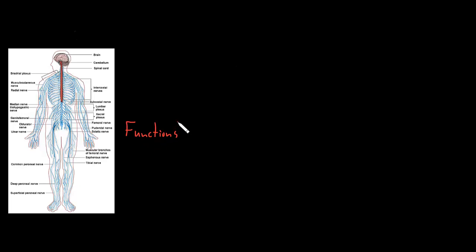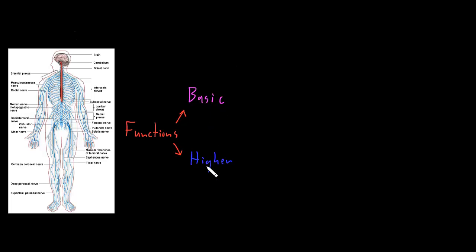The way I like to think about the functions of the nervous system is to first divide them into two big categories: the basic functions of the nervous system and the higher functions of the nervous system. You could say lower and higher, or basic and complex. The reason I prefer these terms is that the basic functions aren't really simple — they're actually fairly complex — and you really need both the basic functions and the higher functions.